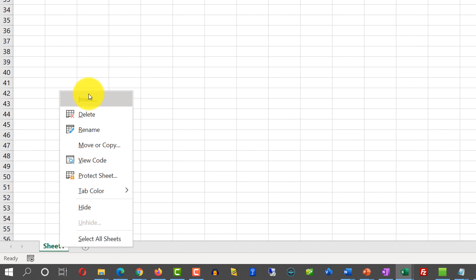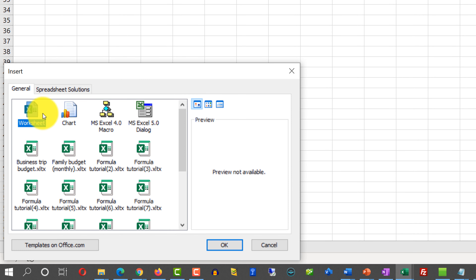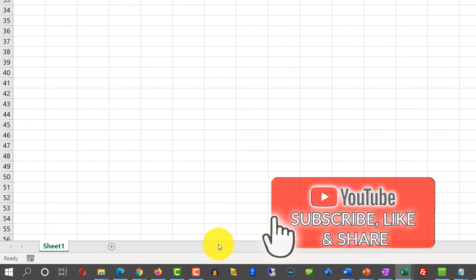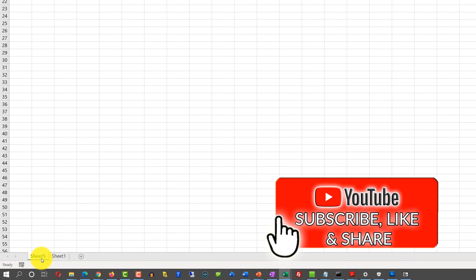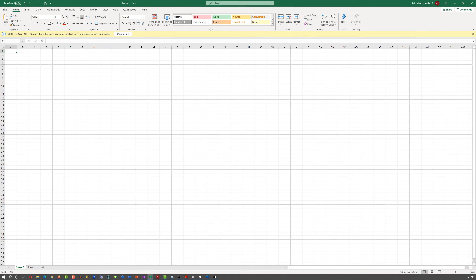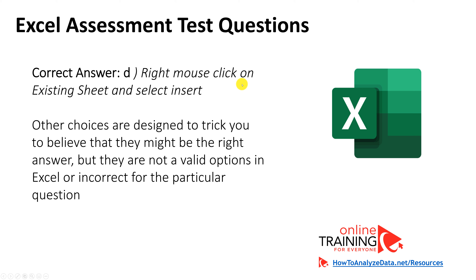Through the method of exclusion, we arrived at choice D: right-click on an existing sheet and select Insert. To create a new sheet in Excel, you right-click on Sheet 1, click Insert, and select Worksheet — which adds a new worksheet to the spreadsheet. The other choices are designed to trick you, as they are either not valid options in Excel or incorrect for this particular question.